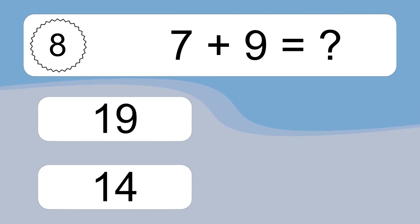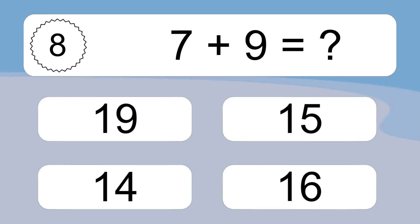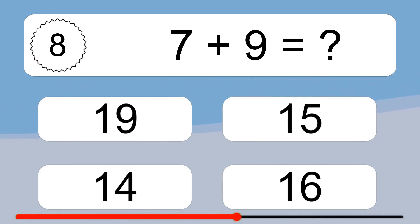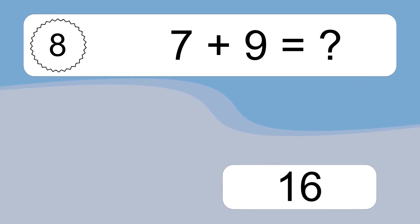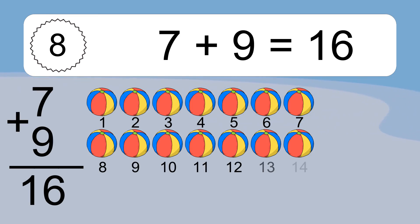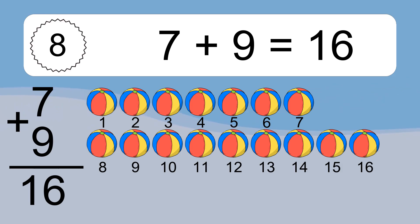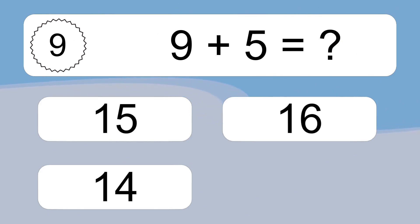7 plus 9 equals what? Let's count it. 1, 2, 3, 4, 5, 6, 7, 8, 9, 10, 11, 12, 13, 14, 15, 16.